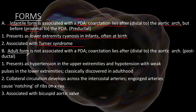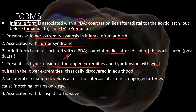The infantile pre-ductal form is associated with Turner syndrome. Then we have the adult post-ductal form, which is not associated with a patent ductus arteriosus. In this case the coarctation lies distal to the aortic arch within the area where the ligamentum arteriosum is found. It presents as hypertension in the upper extremities and hypotension with weak pulses in the lower extremities.